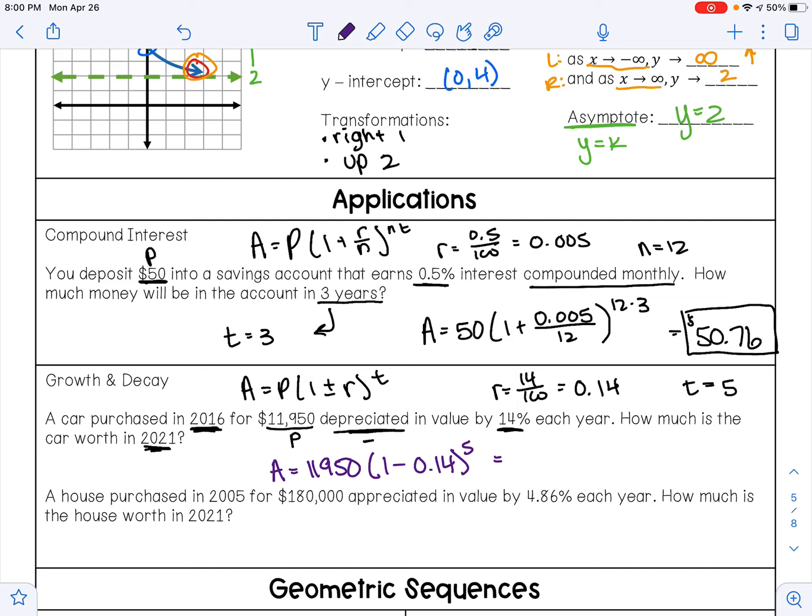I'm just going to go ahead and enter that into my calculator. And when I do that, I get $5,621.60. So that same car is now worth $5,621.60 five years later.